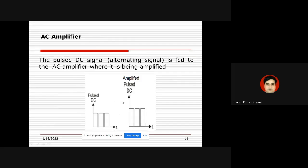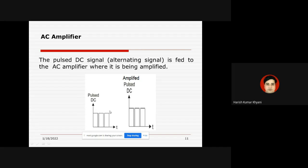The main aim of the amplifier is to raise the amplitude of the input signal. The pulse DC obtained as the output of the chopping device is the input for the AC amplifier. When this pulse DC signal is fed to the AC amplifier, we get an amplified pulse DC output — an amplified version of the pulse DC.